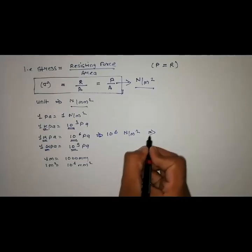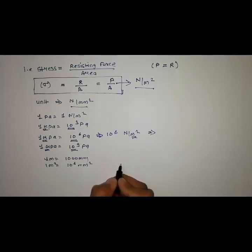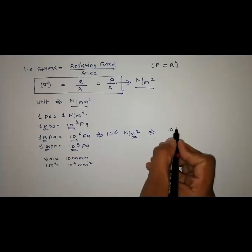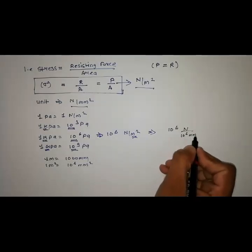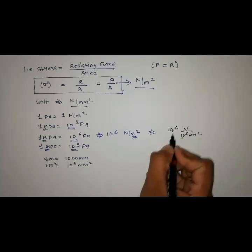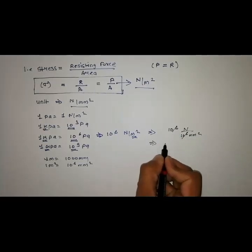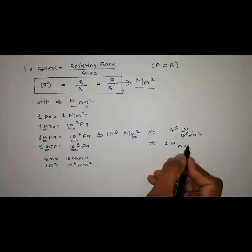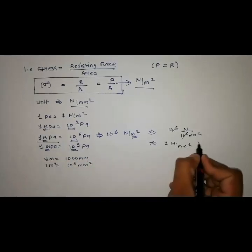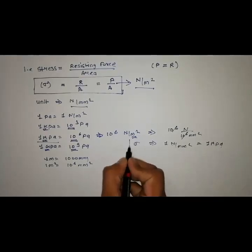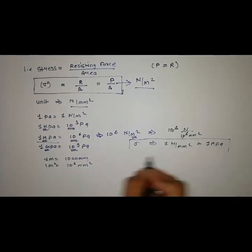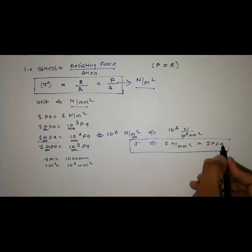So to convert this meter square into mm square, divide by 10 raised to the power 6 like this. So here it will cancel and we will get 1 Newton per mm square, that is 1 Megapascal. So stress is always mentioned in Newton per mm square or Megapascal.